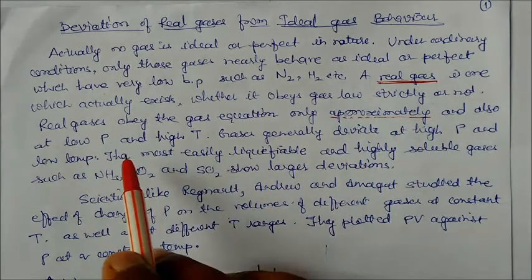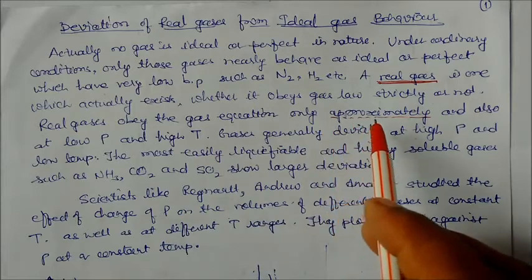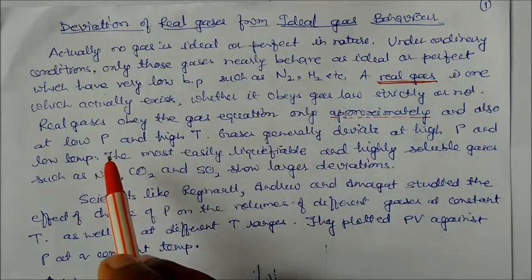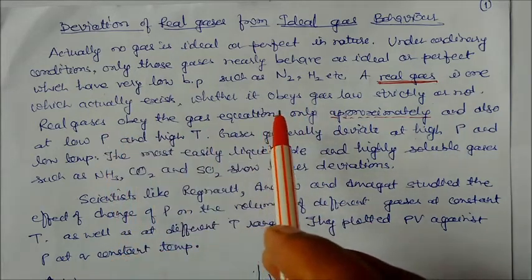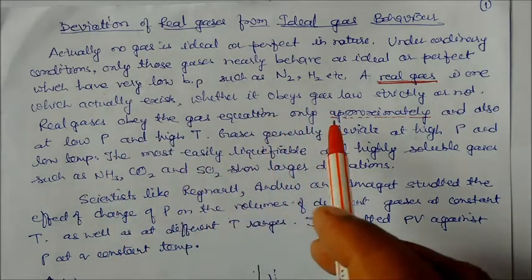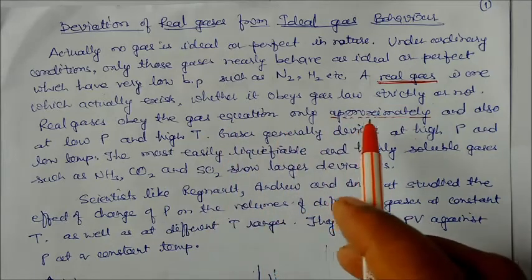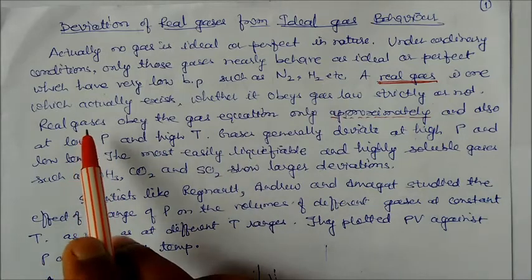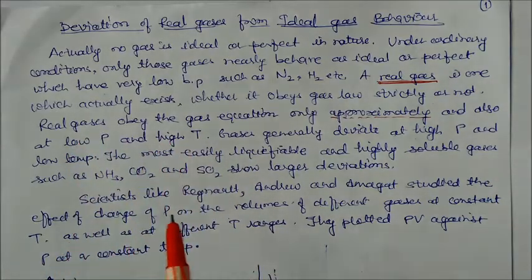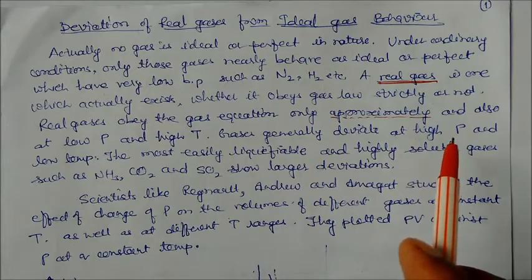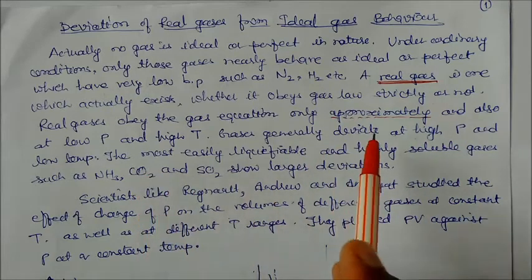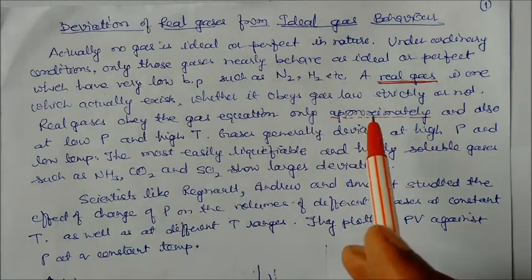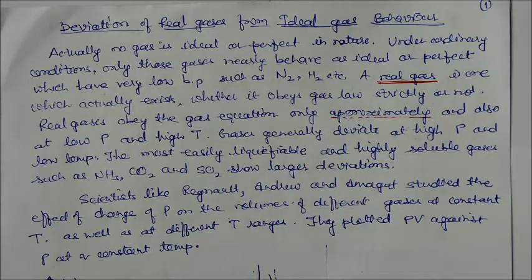Real gases obey gas equations — such as Charles' law and Boyle's law — only approximately, and only at low pressure and high temperature. When conditions are at low pressure and high temperature, real gases will behave like ideal gases and follow the ideal gas laws. At high pressure and low temperature, gases generally deviate.